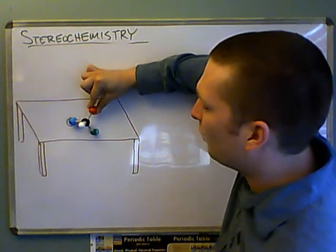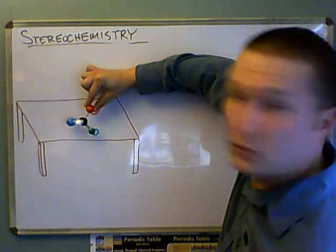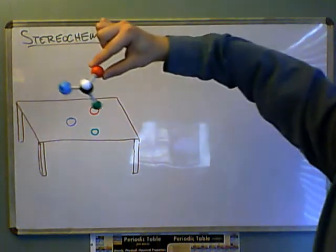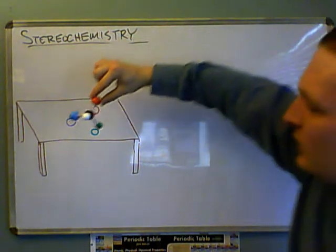The red one goes into the red hole, the blue one goes into the blue hole, and the green one goes into the green hole. You see? So it has the correct configuration in space.